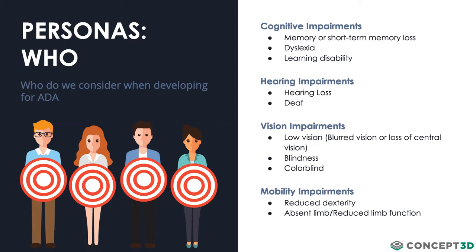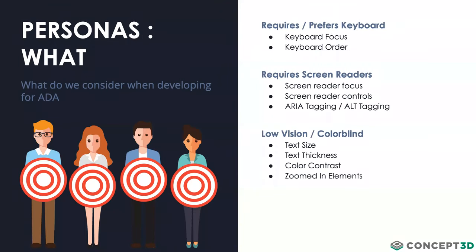The percentages are generally the same whether you're looking domestically or internationally — around 10% of people in the world have a disability of some kind. When developing accessible solutions, there are four main categories of accessibility we think about: cognitive impairments, hearing impairments, vision impairments, and mobility impairments. Things like deafness, blindness, and colorblindness, but there's usually more of a spectrum — some level of hearing or vision loss, but not necessarily complete loss.